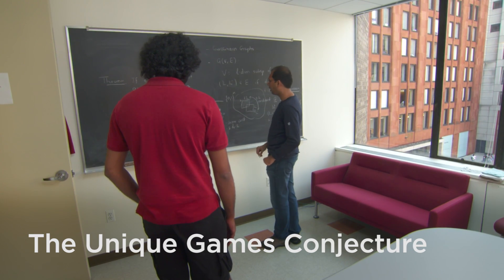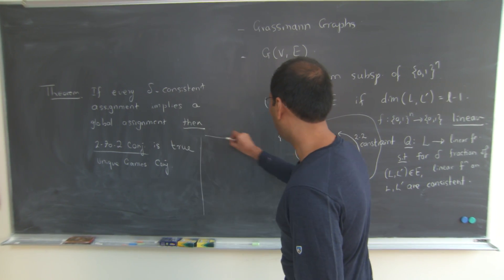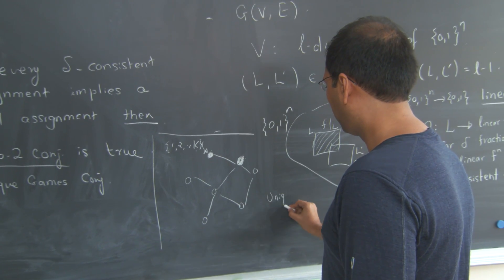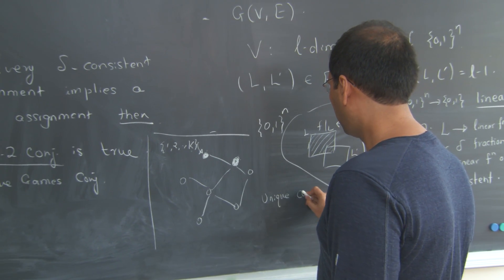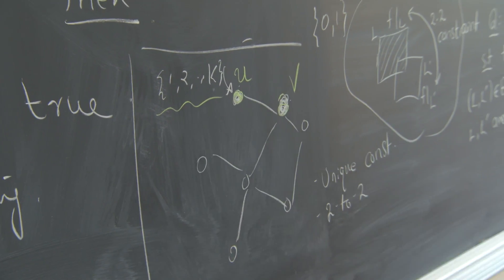Unique Games conjecture states that a certain very specific computational problem about coloring nodes of a network to satisfy certain compatibility conditions is very hard to solve, and in fact, very hard to even find reasonably approximate solutions.